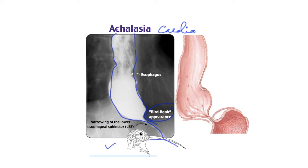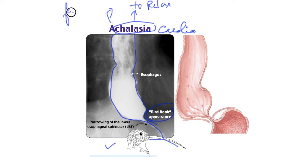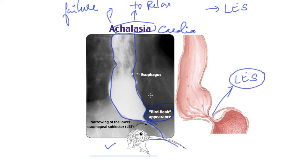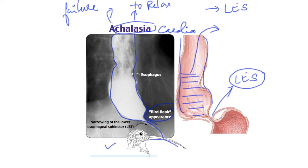Let us split the term: 'achalasia' means failure to relax — 'a' negates 'chalasia' which means to relax. So it is the failure to relax the lower esophageal sphincter (LES). When the LES does not relax, there will be dilatation of the proximal esophagus, leading to stasis of food and saliva. This causes recurrent vomiting. Also, since the LES is not relaxing, peristaltic waves are not smooth, so there will obviously be dysphagia.